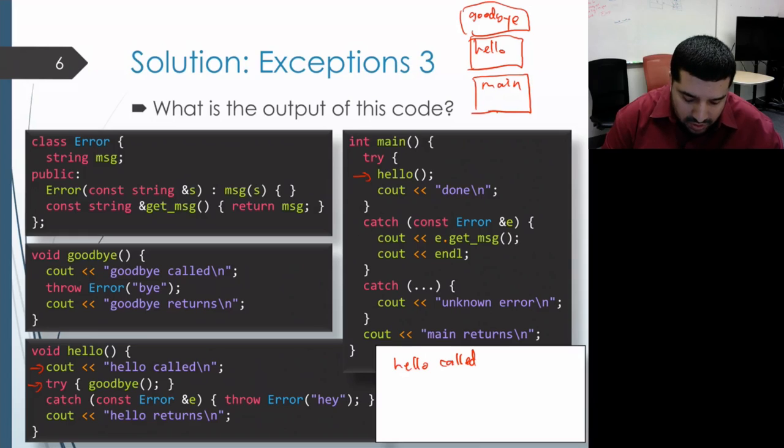And execution proceeds to the body of goodbye. And the first thing that that does is it prints out goodbye called, and then it follows that up by throwing an error object.